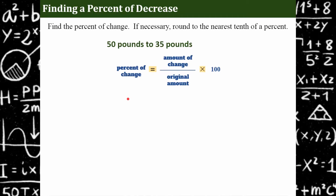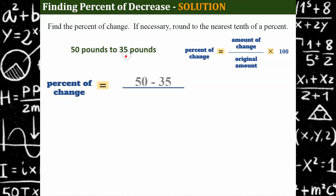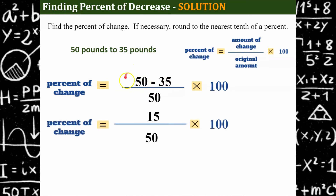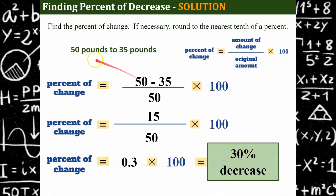Let's look at finding a percent of decrease. We went from 50 pounds to 35 pounds — let's think about a dog losing weight. The amount of change is 50 subtract 35, and the original amount was 50. The difference between 50 and 35 is 15, over the original amount of 50, equals 0.3. Multiply by 100 and I get 30 percent. This was a decrease — it decreased 15 pounds, which is a 30 percent decrease. The dog lost 30 percent of its original weight.